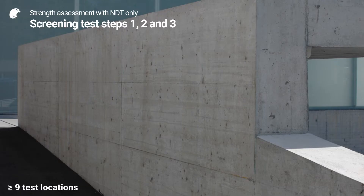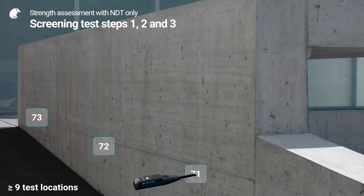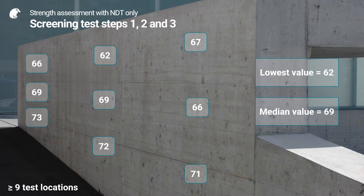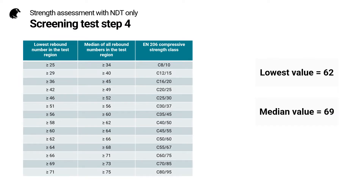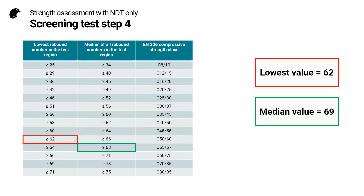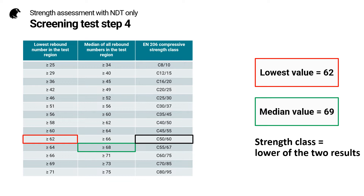In practice, it's a very simple procedure. We begin by doing NDT measurements at a minimum of nine test locations, then look at the lowest value and work out the median of all the values. The final step is to compare these two values with the table. Taking the example table provided in the standard: the lowest value is 62, the median value is 69, so the compressive strength class is the lower of these two results — confirming this concrete to be at least C5060.